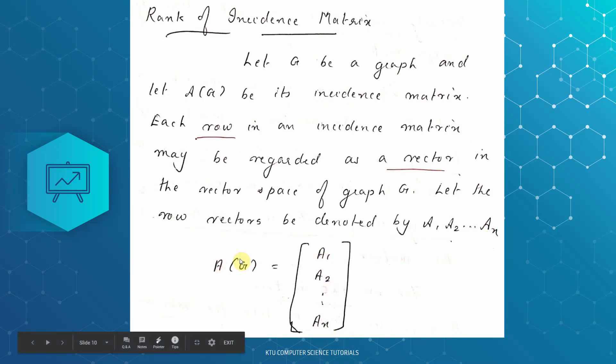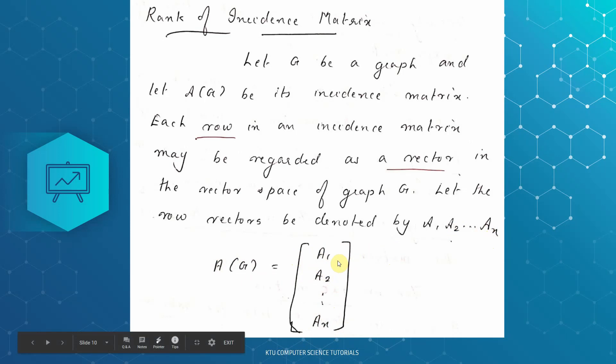A of G is the incidence matrix. We have a set of row vectors that represent A, where each row vector denotes one vertex.